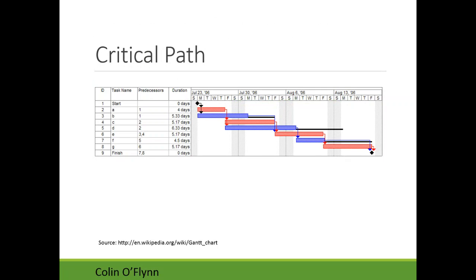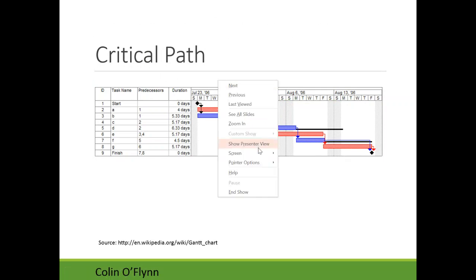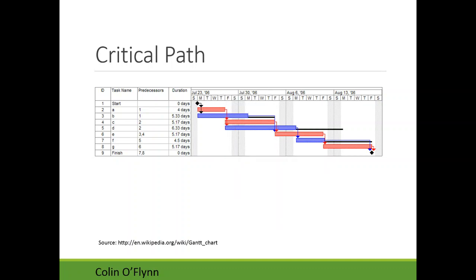Here's a Gantt chart showing the critical path — highlighted in red. Any delay on the red path would delay the whole project, because everything there is back to back. In blue, there's room to spare: if a blue task expands, as long as it doesn't expand too far, it won't delay the project. But if tasks in red expand, they will delay the project — that's what makes it the critical path.